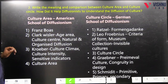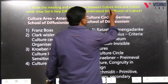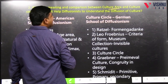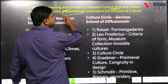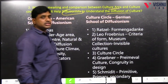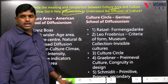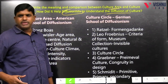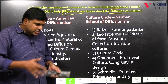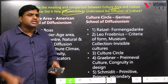Next question: write the meaning and comparison between culture area and culture circle, and how did it help diffusionists to understand the diffusion of culture? Some students properly mentioned a box: this is culture circle, this is culture area, this is functionalism, this is structural functionalism.